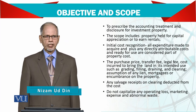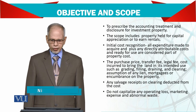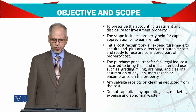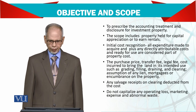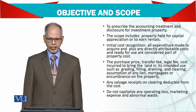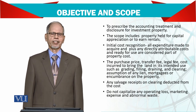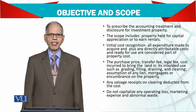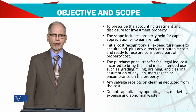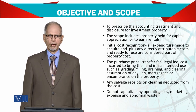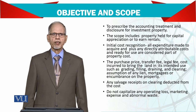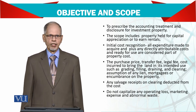Now the objective and scope. The scope is to prescribe the accounting treatment and disclosure for investment property. The scope includes property held for capital appreciation or to earn rental. It is very clear that you are holding and buying this property for the purpose of appreciation in value or for rental — not for use in business.